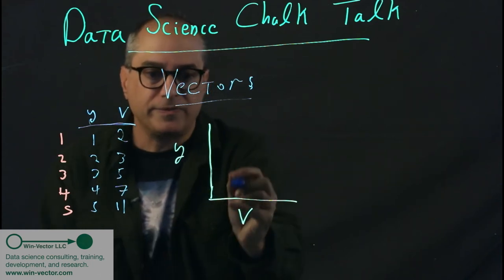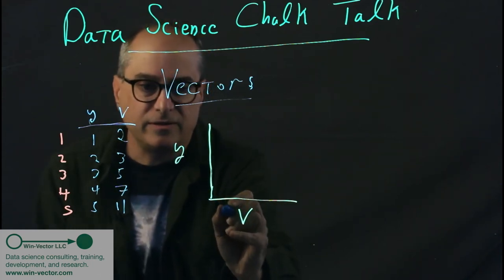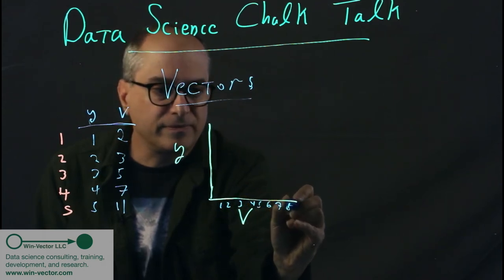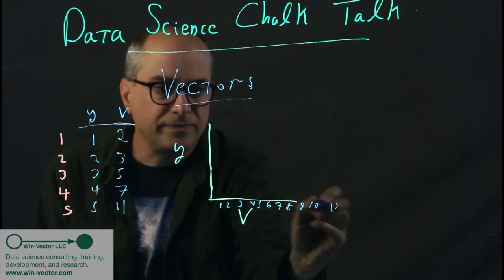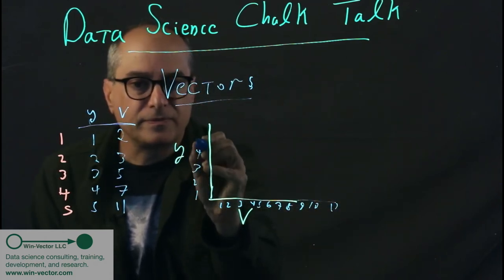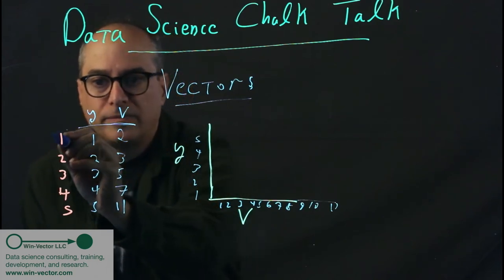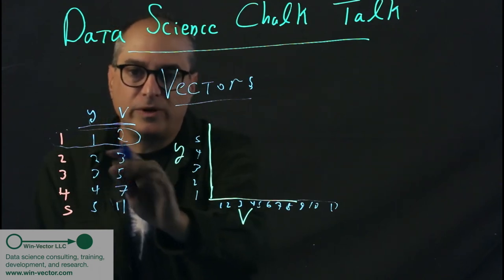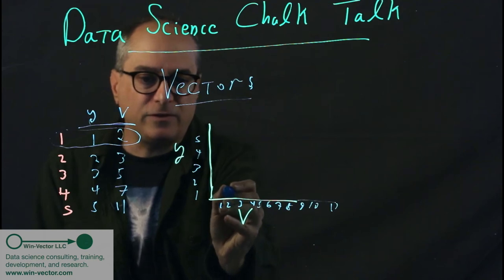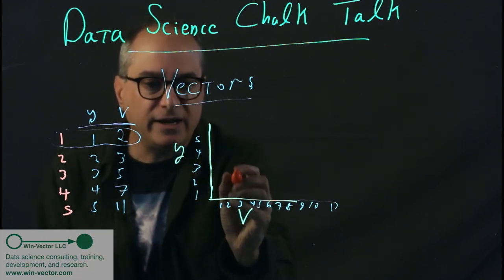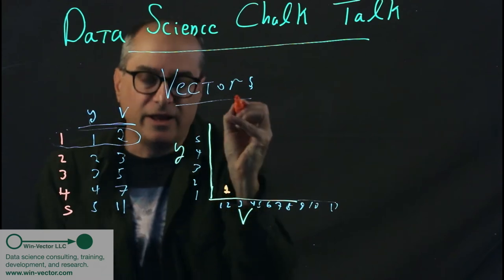So scatter plot, all we do is we take each row, which is an instance, and treat it as a point. And we say, for this row, we simultaneously know that y is 1 and x is 2. So we know that point, that row, can be portrayed as being right there.